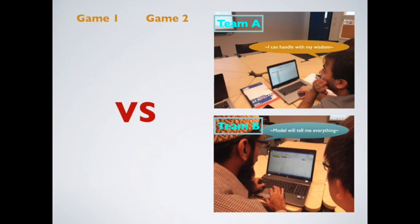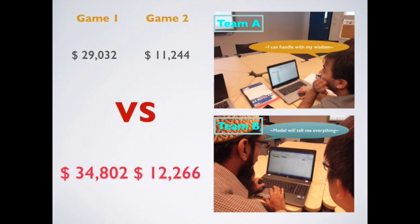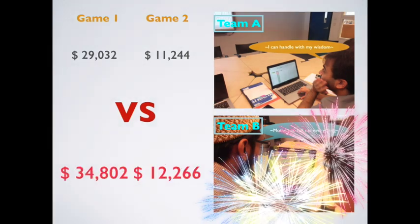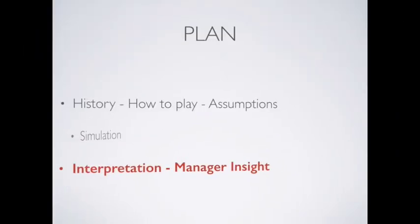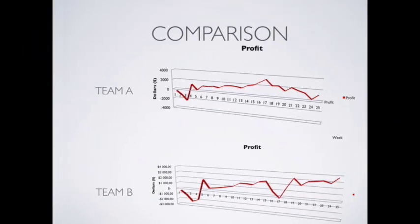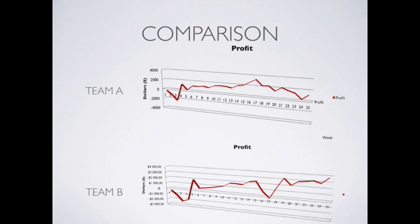Now let's look at the game result. In the first game team A got final profit of $29,000 and profit of team B was $35,000. Besides, team B also won team A by $1,000 in game two. Congratulations to team B who won both of the two games.